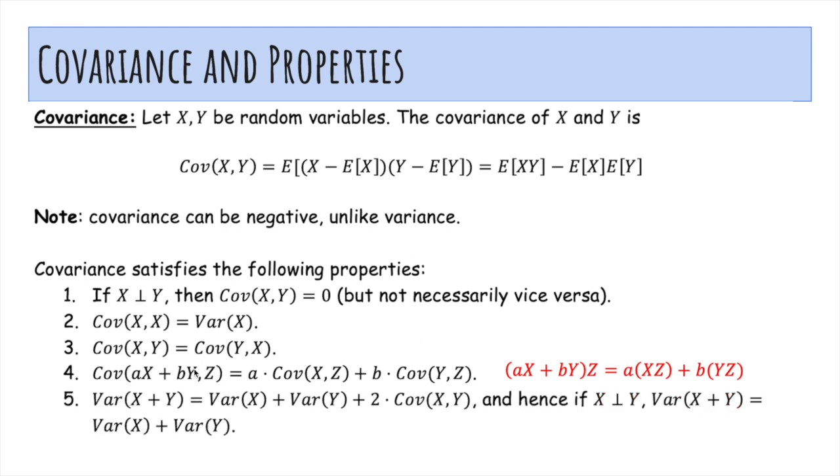The variance of X plus Y in general is the variance of X plus the variance of Y plus two times the covariance of X and Y. And hence if X and Y are independent, the covariance is zero, so this term goes away and you just get variance of X plus variance of Y, which is what we used earlier.